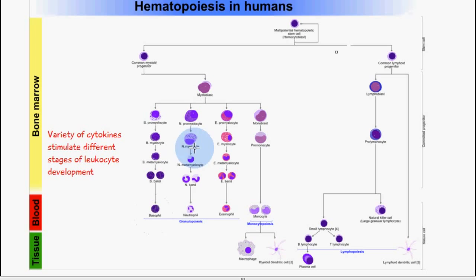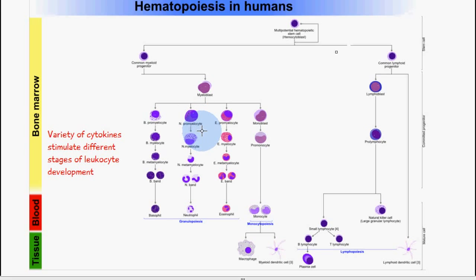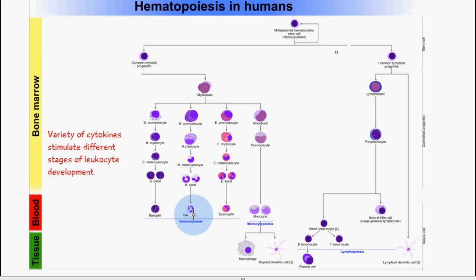If it's a neutrophil we want to produce, from the myeloblast it differentiates into the neutrophilic promyelocyte, then the neutrophilic myelocyte, then the neutrophilic metamyelocyte, then the neutrophilic band, and then it forms the neutrophil.